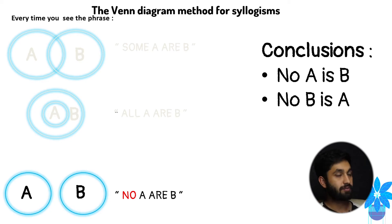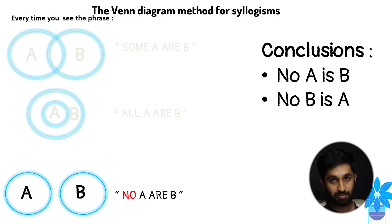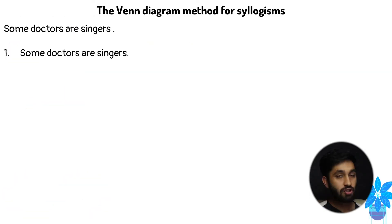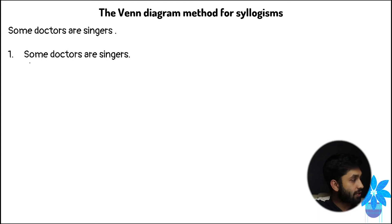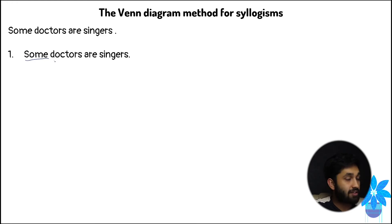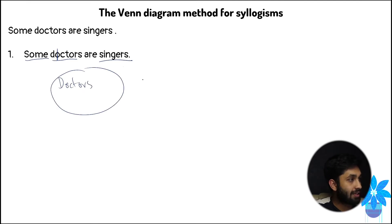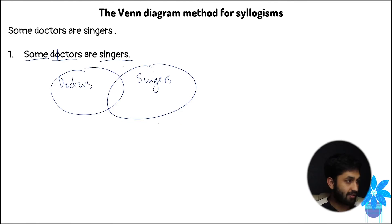Every time you see these phrases, draw the Venn diagram associated with them. Let's put it into practice: 'some doctors are singers.' The keyword is 'some,' so draw the two circles overlapping each other. The two main objects are doctors and singers. Draw a circle for doctors, a circle for singers, and overlap them. This diagram represents 'some doctors are singers' — the middle overlapping portion specifically.